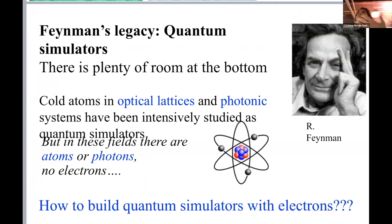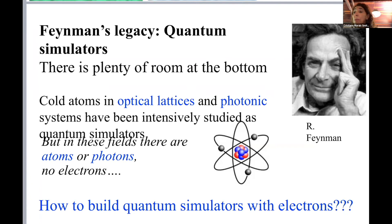Everything came from Feynman when more than 60 years ago he gave a talk telling us there is plenty of room at the bottom, inviting us to generate matter in a bottom-up approach and to construct matter with the functionalities we are interested in. It took very long for these ideas to flourish. It started about 20 years ago in cold atoms in optical lattices and later in photonics, and only very recently with electrons.